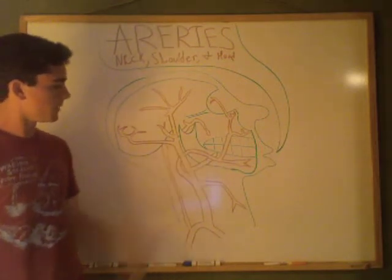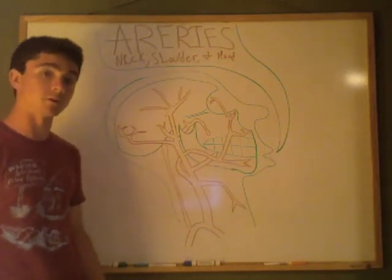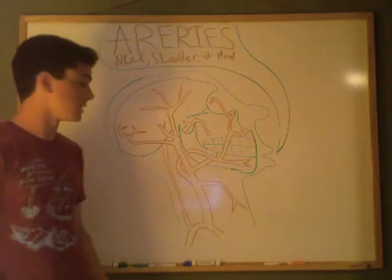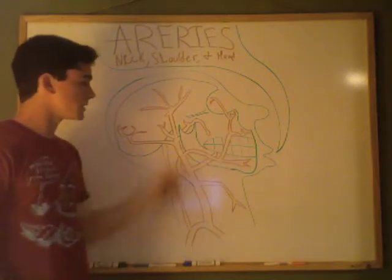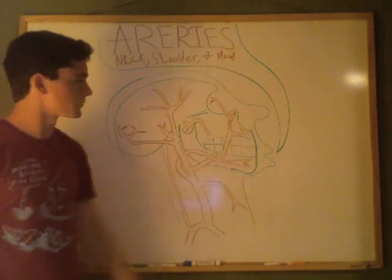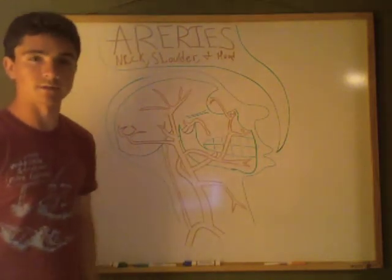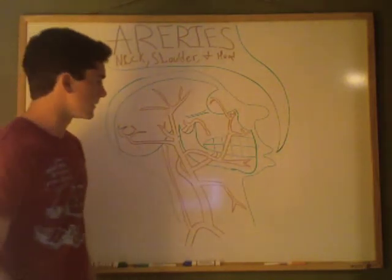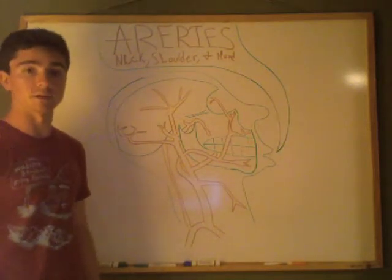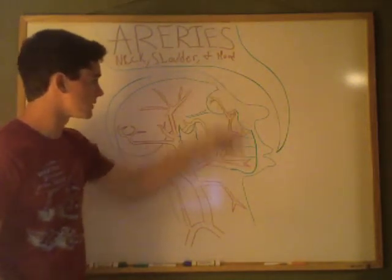Above the lingual artery, we have the facial artery, just like the facial vein. The facial artery is going to provide blood to the whole front region of the face — the anterior region of the face. That covers a lot of surface area, just like the facial vein did.